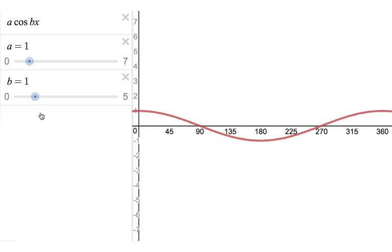Let's put it back to 1. Let's have a look at what effect b has. Here's a normal cosine graph where we've got cos x, cosine of 1x.